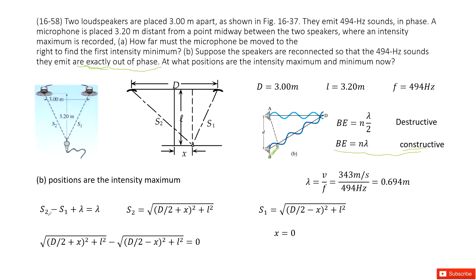Constructive interference, S2 minus S1, this time is not in phase. It is out of phase. Out of phase brings the wavelength lambda. And also equal to N times lambda. Then we choose the fundamental one, N equal to 1, so lambda. And also we still input S2, S1 inside. We find x equal to 0.